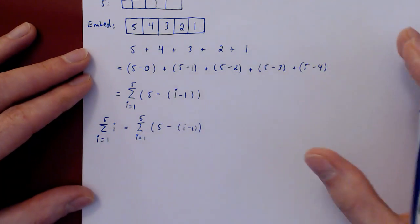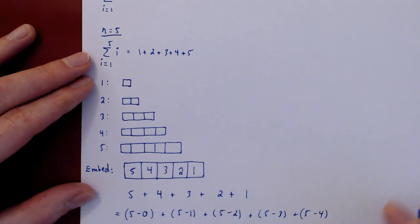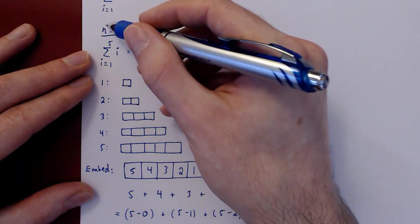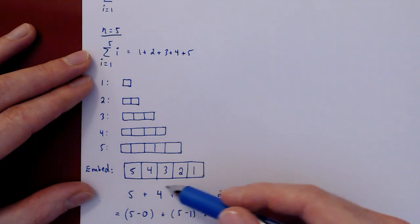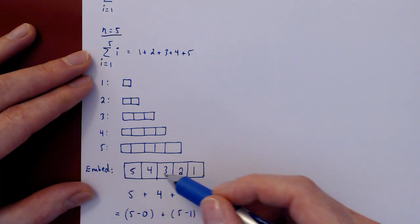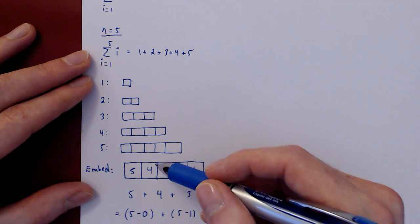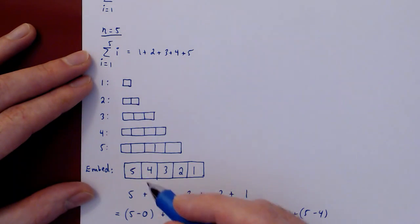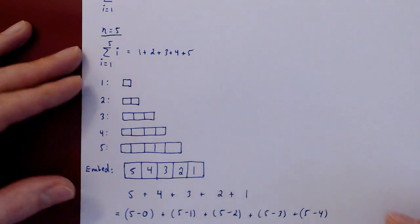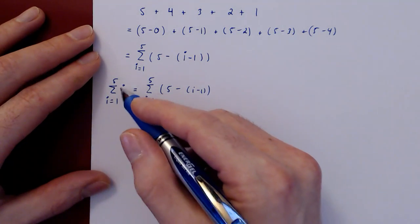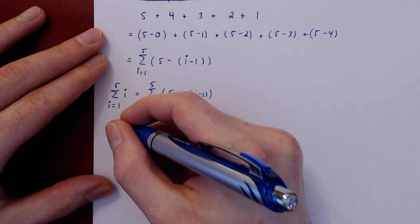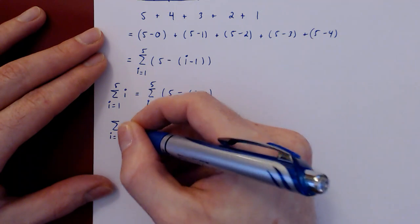And now we make the final remark that there was nothing special about n being 5 here. Instead of 5, we could have used any value for n, and the argument would hold just the same. The segment of length n, of n squares, contains within it all of the previous shorter segments. If you embed them, you would get starting at n all the way down to 1. So it's the exact same geometric argument. So now let's replace back 5 by n to have the more general result.